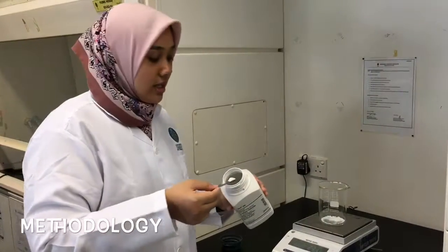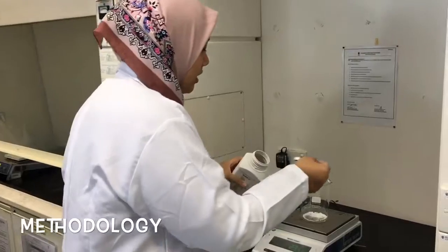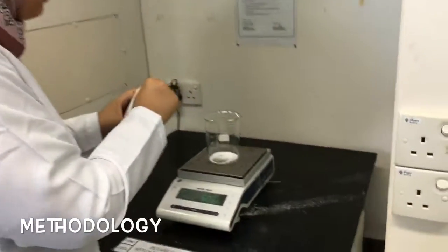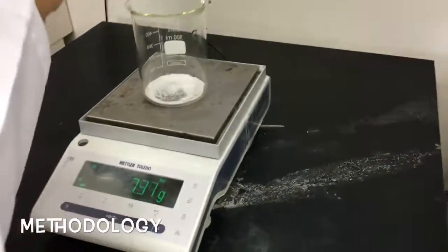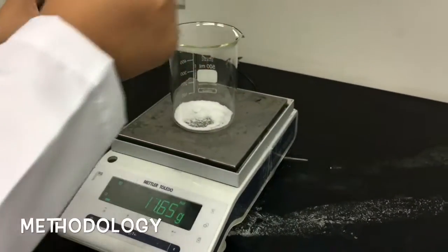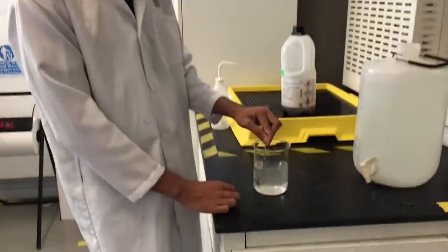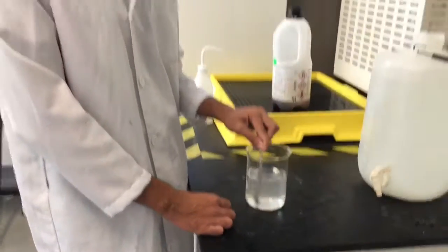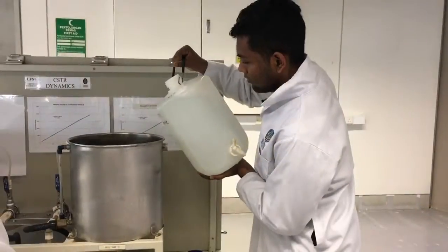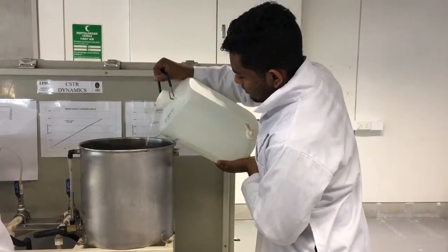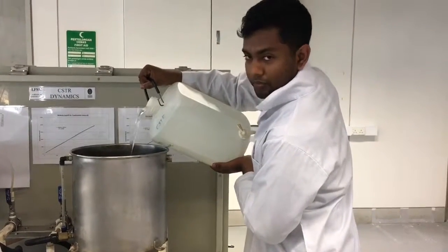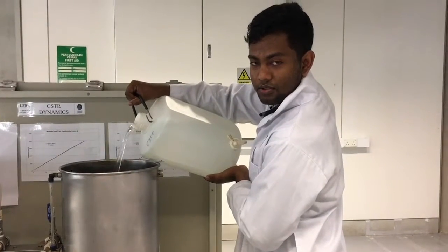Take 14.6 grams of NaCl and measure it inside a beaker. Take 0.79 liters of distilled water to make 0.05 molar of NaCl. Pouring the NaCl solution in the solution tank.